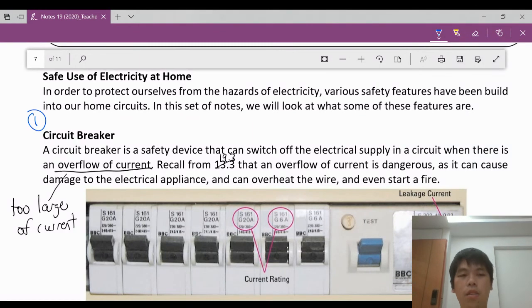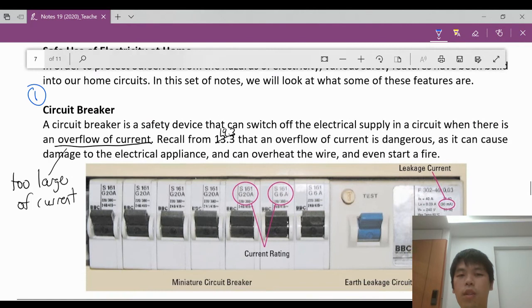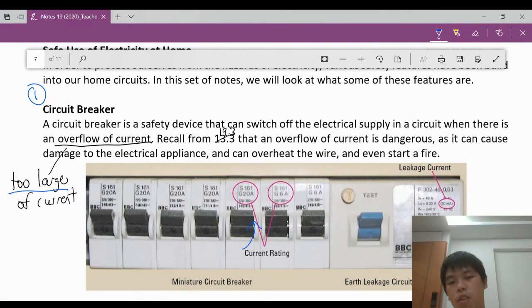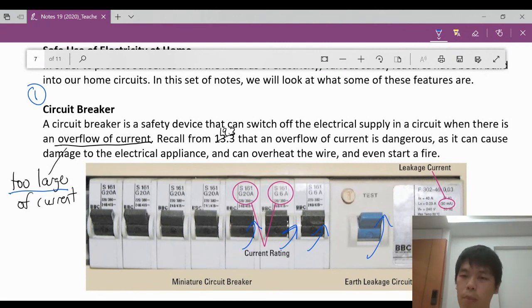All our house have a circuit breaker. It's usually behind your door in most of the new houses nowadays. So what is a circuit breaker? It's a safety device that can switch off the electrical supply in the circuit when there is an overflow. Current overflow means when the current is too large. When the current flow is too large, it will switch off. How will it switch off? In your respective environment, each of this area of this switch may flip up or if there's too much current, the main one will just flip up.